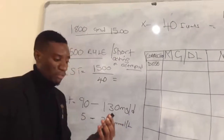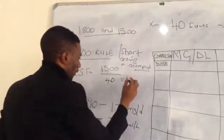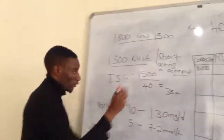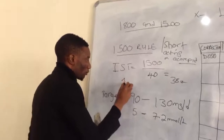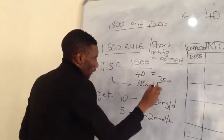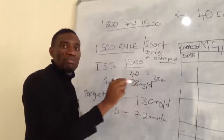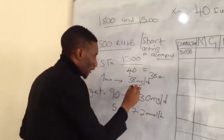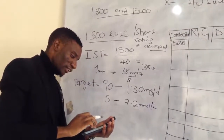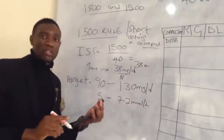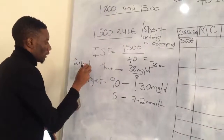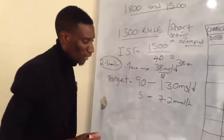Dividing 1500 by 40 gives us approximately 37.5, which we round to 38. This means one unit of insulin reduces this patient's blood sugar by 38 mg/dL. To convert to mmol/L, we divide 38 by 18, giving us 2.1 mmol/L.